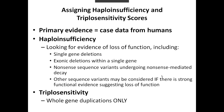When considering evidence for haploinsufficiency and triplosensitivity scores for this project, our primary evidence is case data from humans. For haploinsufficiency, we're specifically looking for evidence of loss of function, including single gene deletion, exonic deletions within a single gene, nonsense sequence variants undergoing nonsense mediated decay, and we will consider other sequence variants if there is strong functional evidence suggesting loss of function. For triplosensitivity, we're really considering whole gene duplications only. We do not consider intergenic duplications as evidence for the triplosensitivity score.